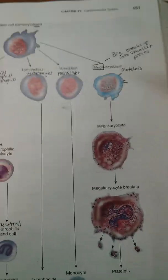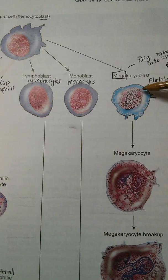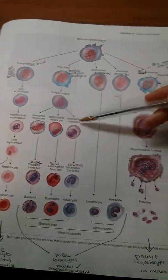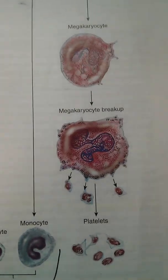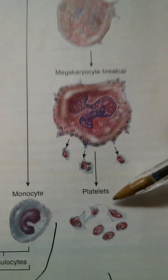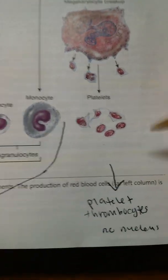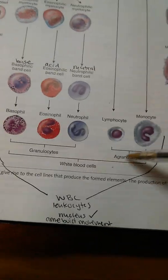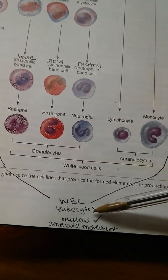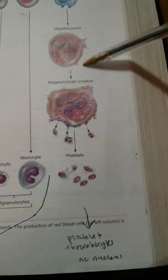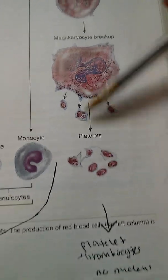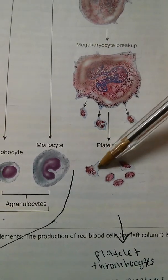The last formed element is the platelets. Platelets start with a megakaryoblast — 'mega' because it's really big, and you can see it getting bigger and bigger in the diagram. It becomes so big that it can no longer fit through tiny veins, so it splits up into tiny little pieces called platelets, or thrombocytes. The scientific names for the three formed elements are: erythrocytes for red blood cells, leukocytes for white blood cells — which is where we get the term 'leukemia' from — and thrombocytes for platelets. Platelets do not have a nucleus; they're not even really full cells because they're just broken-up pieces of the megakaryoblast.